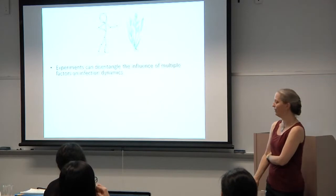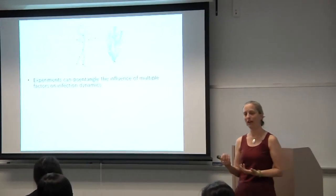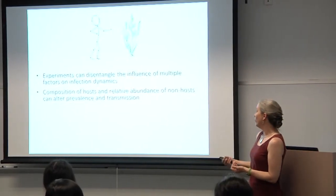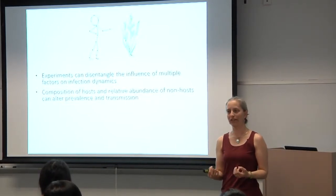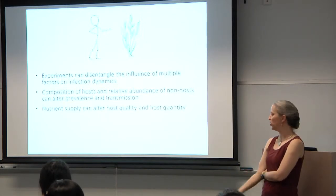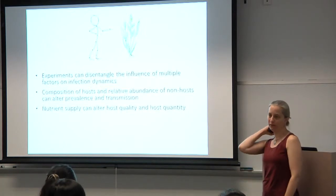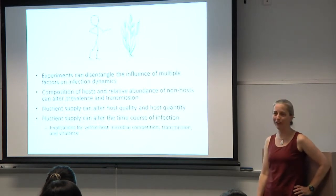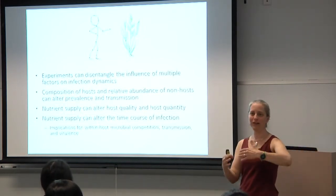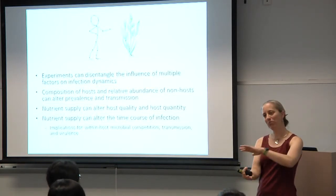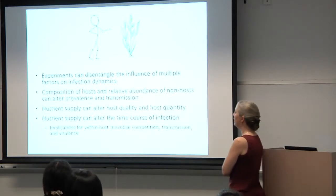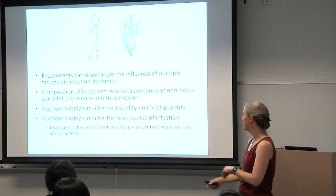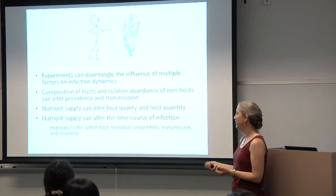So here's where I'd like to leave you: experiments can disentangle elements that are very difficult to disentangle for other species, particularly humans and vertebrates in general. The composition of hosts and the relative abundance of non-hosts can really alter infection. Nutrient supply can alter host quality and quantity. But within hosts, nutrient supply can also alter the time course of infection. This may be a new way to think about the relationship between malnutrition and infection — this non-equilibrium relationship — with implications for within-host microbial competition, transmission properties, and virulence itself.